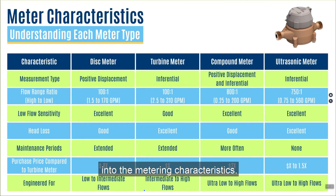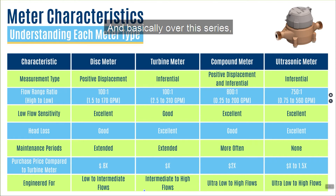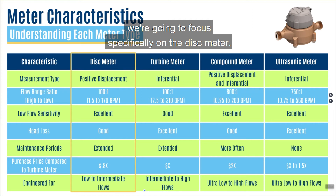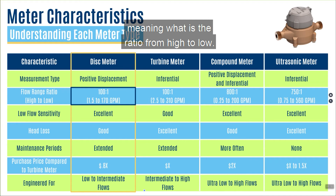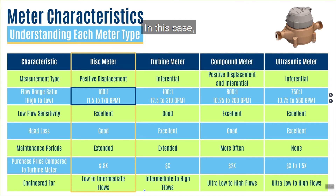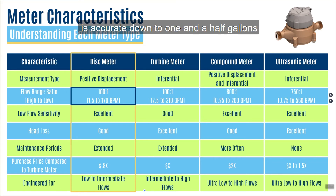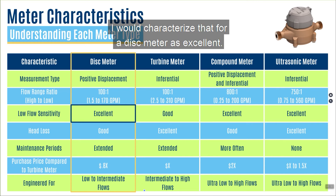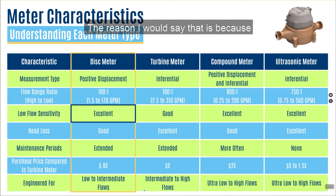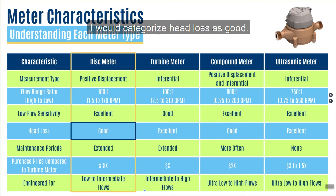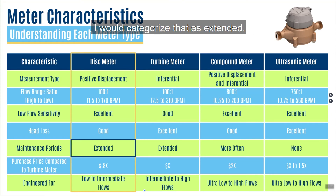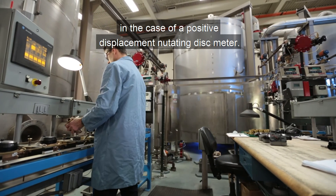Now let's move into the metering characteristics — seven characteristics to focus on. First, measurement type: as discussed, this is a positive displacement meter. Second, flow range ratio — the ratio from high to low. For a two-inch disc meter, it's accurate from one and a half gallons per minute all the way up to 170, giving it approximately a 100-to-1 ratio. Third, low flow sensitivity: I would characterize this as excellent. These meters are designed specifically for this — excellent at low flow, good for intermediate flows, but not made for high flow. Fourth, head loss: I would categorize that as good.